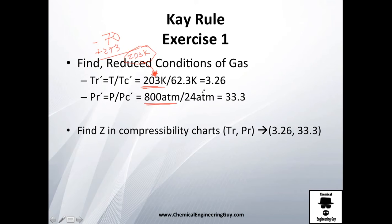Now we have a mixture of gases and we can treat it as any gas and do the normal procedure. Let's find the Z value in the compressibility charts for this set of values: Tr = 3.26 and Pr = 33.3.